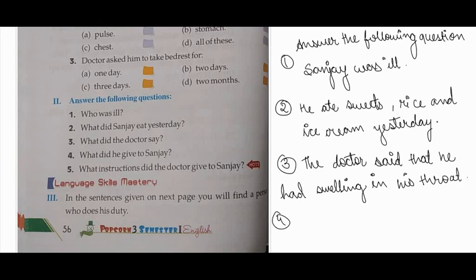Fourth, what did he give to Sanjay? He gave some pills and a syrup to Sanjay.